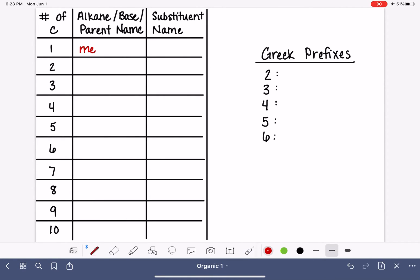If we have one carbon in the chain, the alkane's name or the base name or the parent name is methane. Two is ethane. Three is propane. Four is butane. And fortunately the rest of them do make sense.